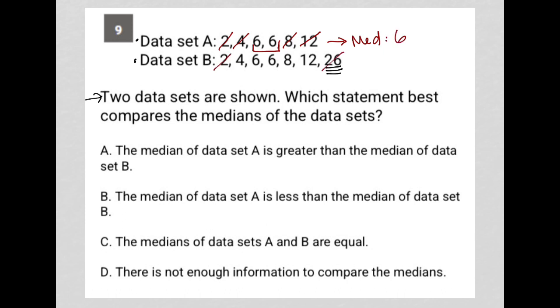For data set B, 2 and 26 cross out, 4 and 12, 6 and 8, 6. So the median is also six for data set B.